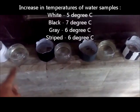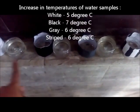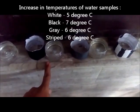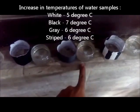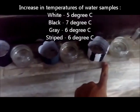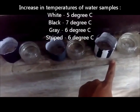Here we have our increase in temperatures. The white one has increased from 30 degrees Celsius to 35 degrees Celsius — that is a 5 degrees Celsius increase. The black one showed a 7 degrees Celsius increase, the grey one a 6 degrees Celsius increase, and the striped one again a 6 degrees Celsius increase.